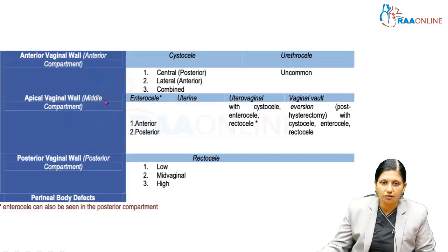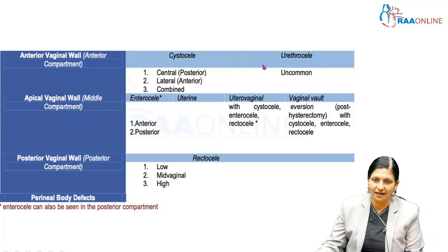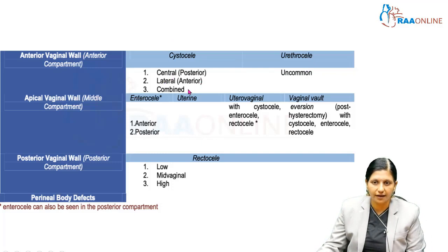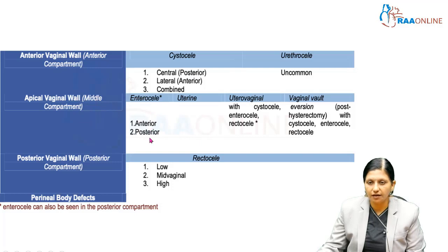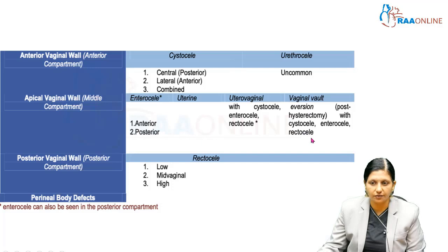In the anterior vaginal wall compartment, prolapse includes cystocele and urethrocele, where urethrocele is uncommon. Cystocele can be central, lateral, or a combined lateral and central cystocele. In the apical or middle compartment, we can have an enterocele (anterior or posterior), uterine descent, uterovaginal descent with cystocele, enterocele and rectocele, or vaginal vault eversion in a post-hysterectomy patient with cystocele, enterocele, and rectocele.